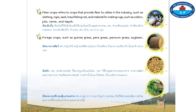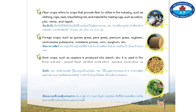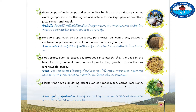One point five, forage crops such as guinea grass, paragrass, panicum grass, soybean, centosima, pubesens, cotillaria juncia, corn, sorghum, etc. One point six, root crops such as cassava, which is produced into starch and used in the food industry, animal feed, alcohol production, and gasohol production as a renewable energy. One point seven, plants that have stimulating effects such as tobacco, tea, coffee, marijuana, and mitragyna speciosa. Some plants with stimulating substances can be used to make medication and food.